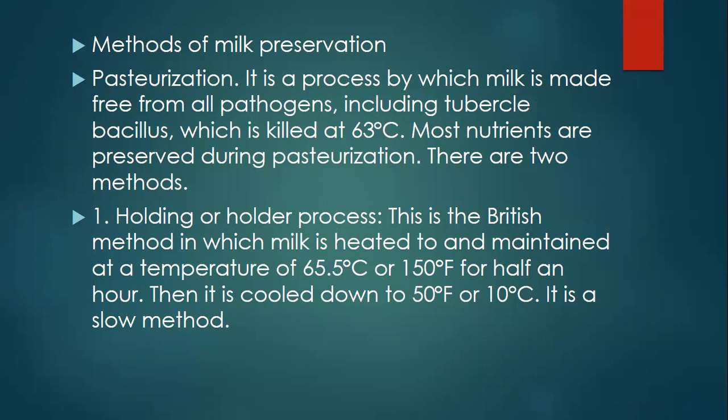Methods of milk preservation. First method is pasteurization. It is a process by which milk is made free from all pathogens, including tuberculosis, which is killed at 63 degrees. Most nutrients are preserved during pasteurization. There are two methods. First, the holding or holder process. This is a British method in which milk is heated and maintained at a temperature of 65.5 degrees (150°F) for half an hour, then cooled down to 50°F or 10 degrees. It is a slow method.